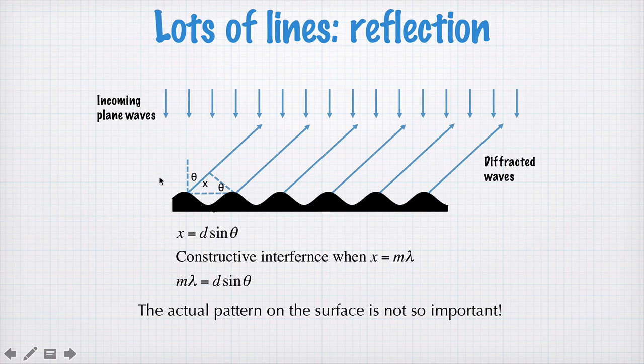Now the diffraction we've considered up until this point has all been one dimensional. So we've had some one dimensional array of slits, or lines, or some periodic pattern like this, and thought about light being sprayed off in this plane here. But diffraction can get really complicated.